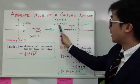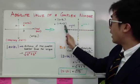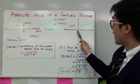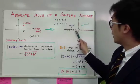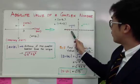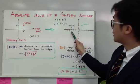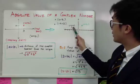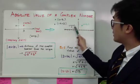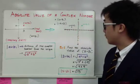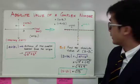And to graph negative 4 plus 2i, negative 4 is on the x-axis — you count 1, 2, 3, 4. And 2i is your imaginary part, so you go up two units, and this will be the graph of your complex number, negative 4 plus 2i.